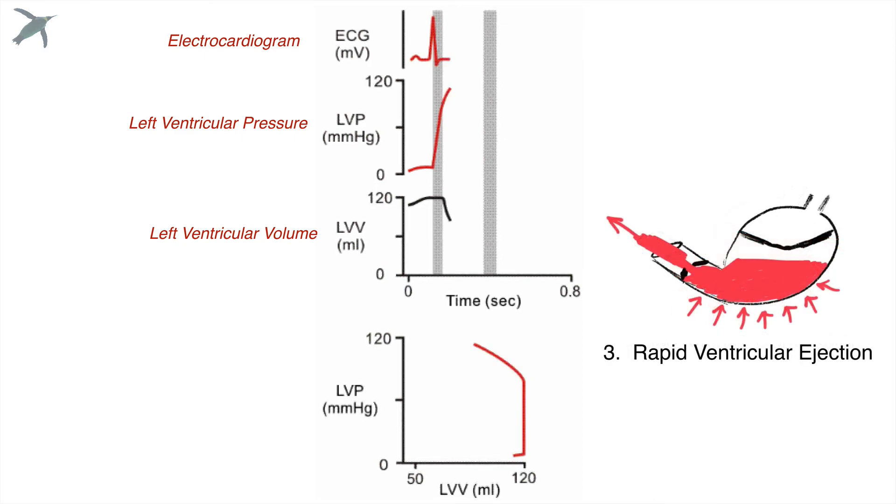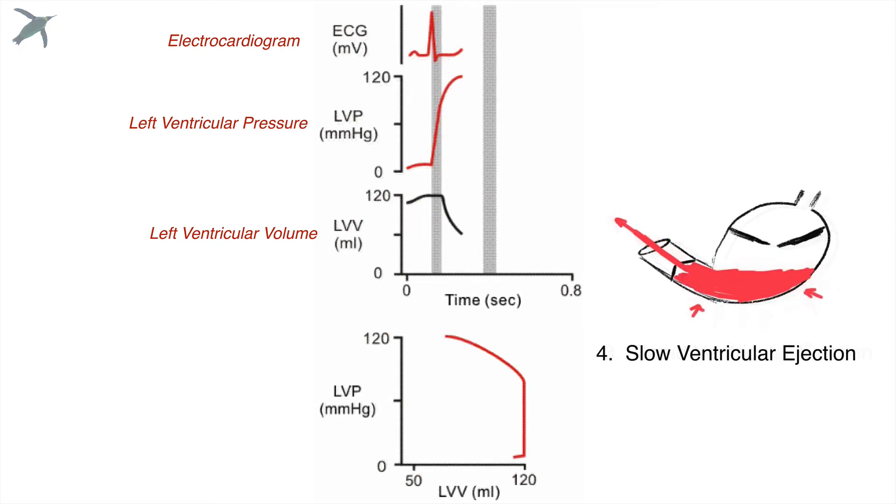Now we have rapid ventricular ejection. We've got the opening of the aortic valve and a huge pressure gradient, which is what causes the blood to be ejected so rapidly. As the blood leaves and the heart finishes its squeeze, the rate of ejection slows down. It's just a matter of the muscle running out of power and the pressure gradient being reduced.